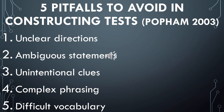Here are the five pitfalls to avoid in constructing tests. Number one, unclear directions. Second, ambiguous statements — confusing statements. Number three, unintentional clues — giving clues unintentionally. Number four, complex phrasing — statements that are too long and confusing. And number five, do not use difficult vocabulary.